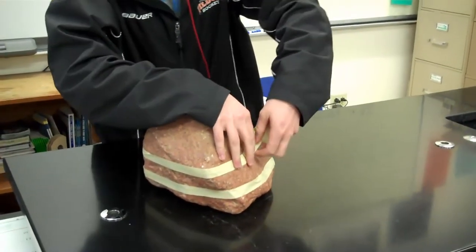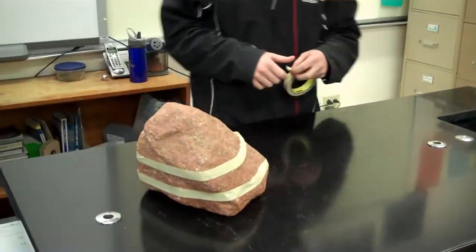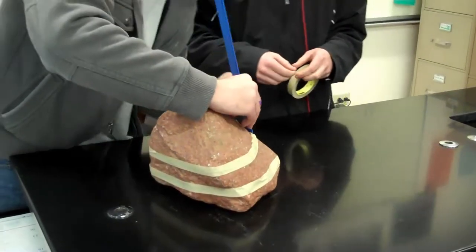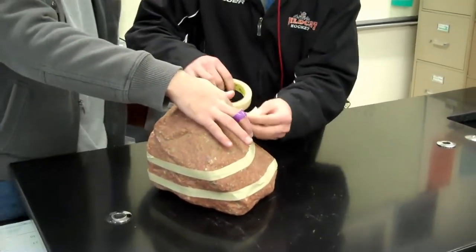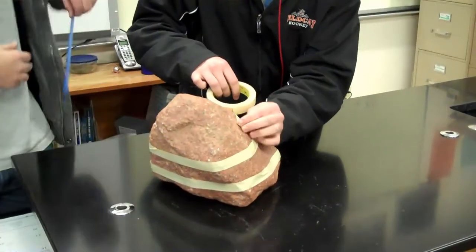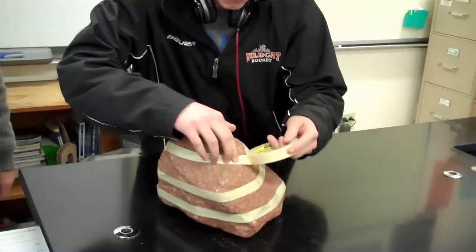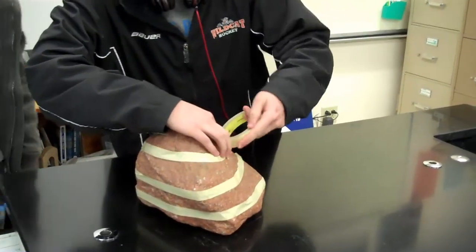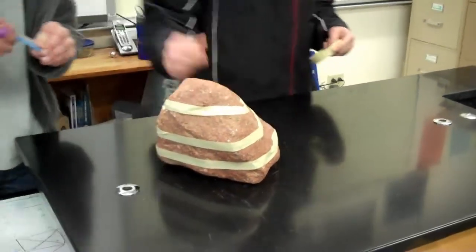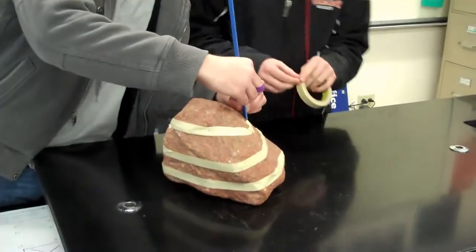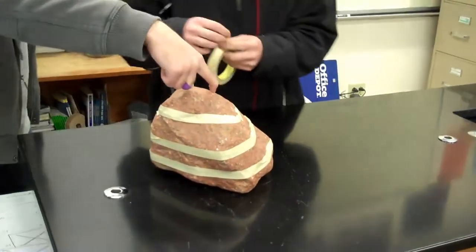Next contour line will be the 6 inch contour line. Notice we're using a consistent contour interval. And then the last contour line in this case, we get to the top of our hill when we get to 8 inches above the table top.